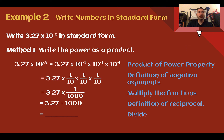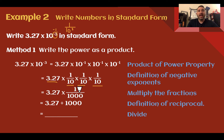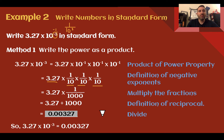Example 2: write numbers in standard form. Write 3.27 times 10 to the negative 3 in standard form. When working with scientific notation, negative exponents mean we're going to divide by 10 each time, or in method 2, move the decimal place to the left. Method 1: a negative exponent means it's 1 over that number, so 10 to the negative 3 is 1 over 10 to the 3rd, which is 1 tenth times 1 tenth times 1 tenth, meaning we divide by 1,000. We end up with 0.00327.